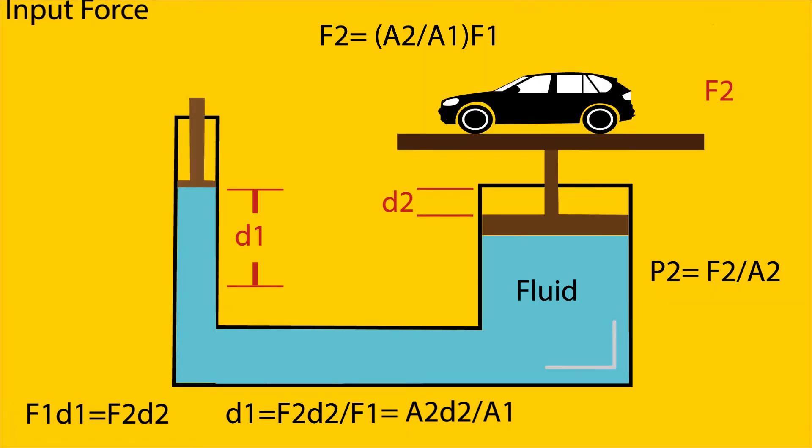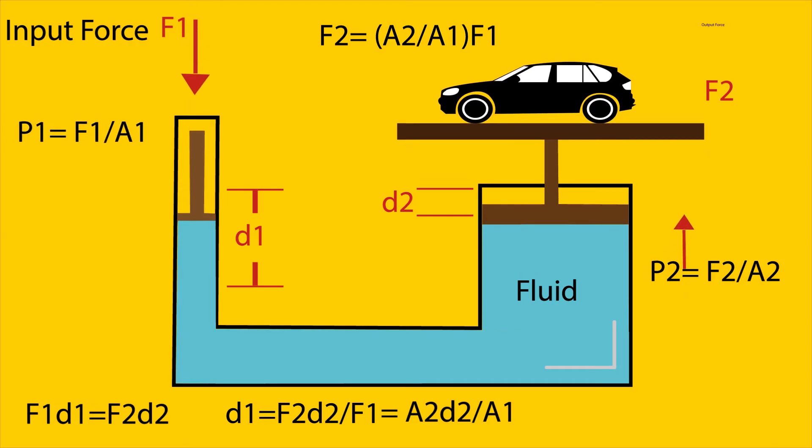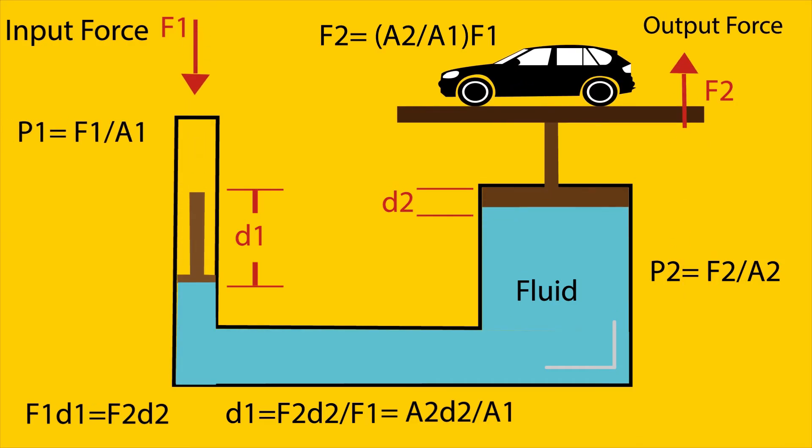Now when we apply force F1 to the left piston then it will create pressure which is equal to F1 by A1. As we know pressure is equal to force per unit area. A1 and A2 are cross section of two arms, and A2 is greater than A1.